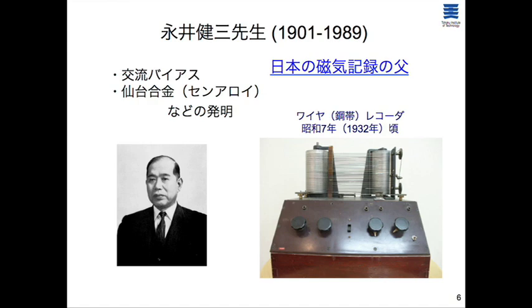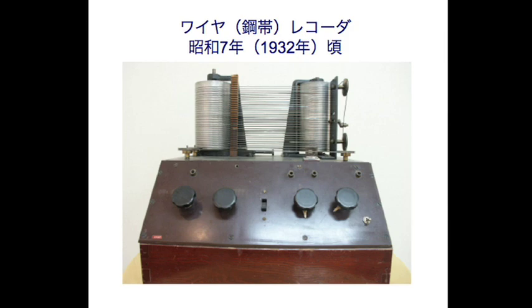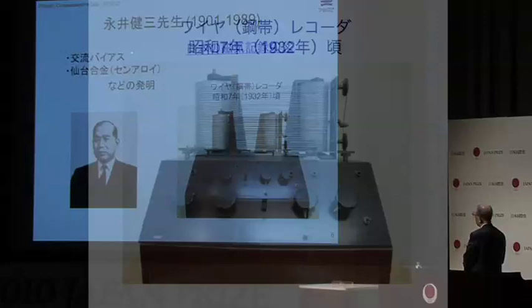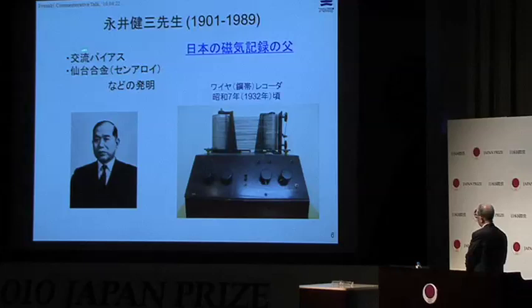That was the original form of magnetic recording, a Danish achievement. In Japan, as shown earlier, Professor Hasegawa — my mentor — followed about 30 years after Poulsen. I studied under Professor Hasegawa from 1951 to around 1963–64. His work included the invention of the AC bias method to reduce recording distortion — a very significant invention that established the foundation of analog recording — and the development of the Sendai alloy, his own recording material.